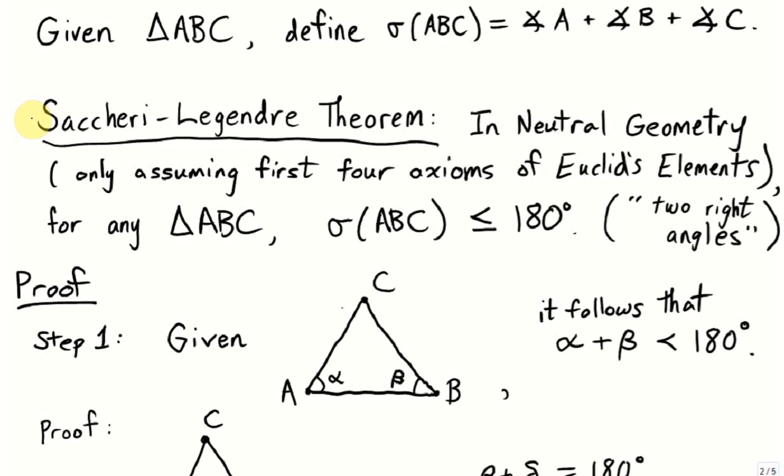Many mathematicians hoped to show that Euclid's fifth axiom, which is very different in character from the other four, could be proven from the other four. The set of results you can prove just assuming the first four axioms from Euclid's Elements is called neutral geometry.